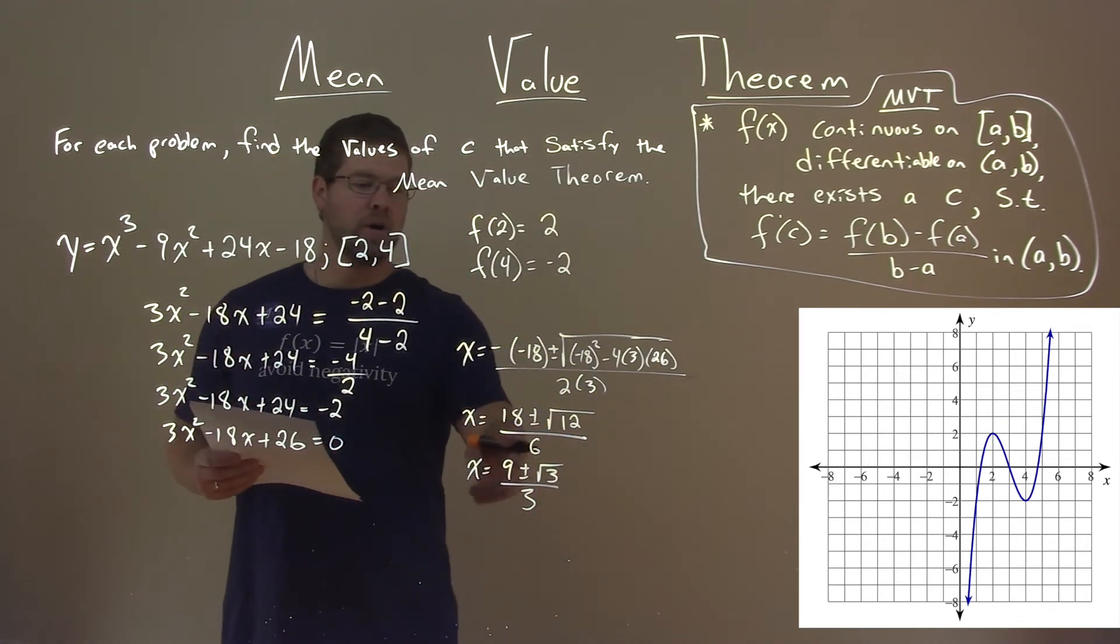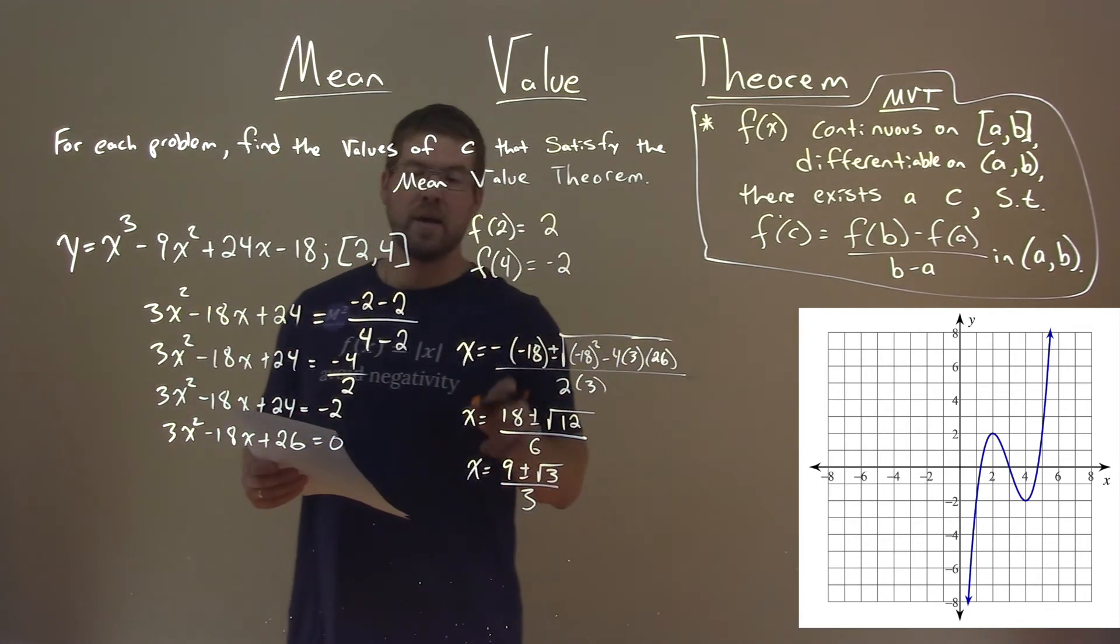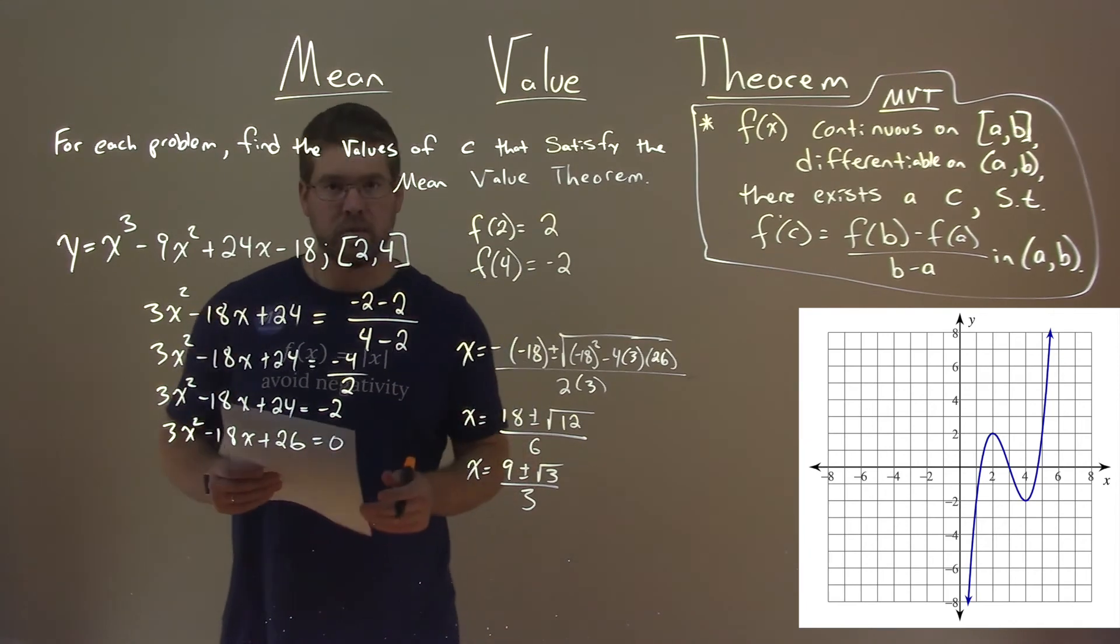And both of these values, the 9 plus the square root of 3 over 3, and 9 minus the square root of 3 over 3, are within our interval.